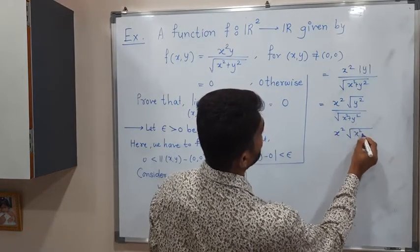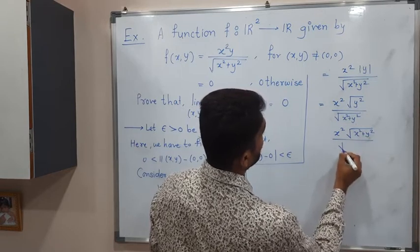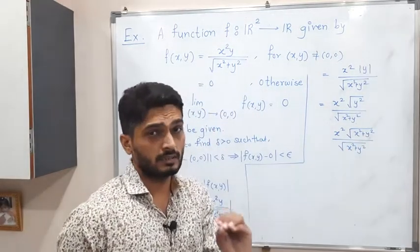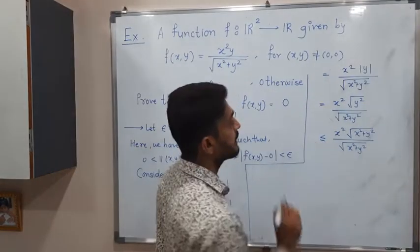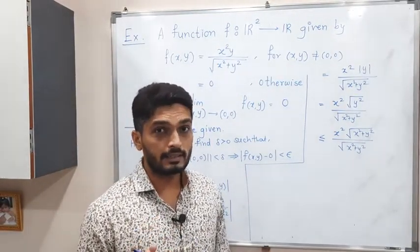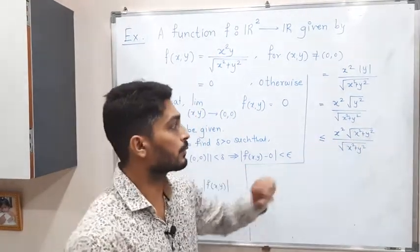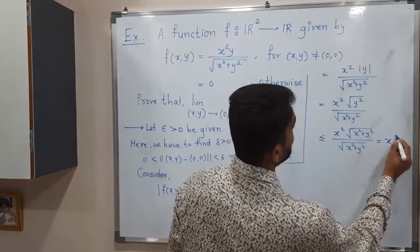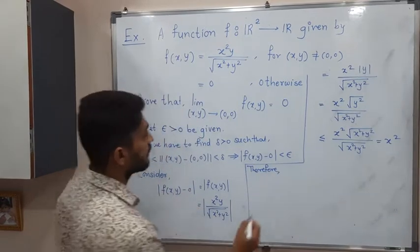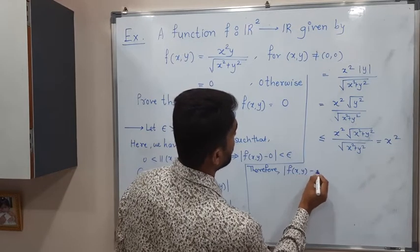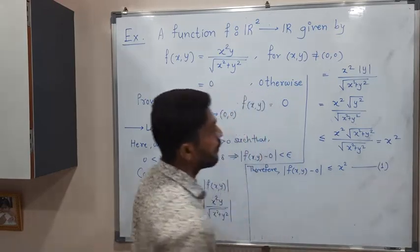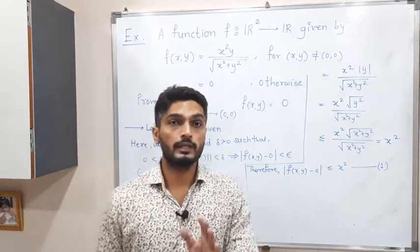Now I am going to add x² in the denominator — that is, replace y² with x² + y² in the denominator. Since we are adding something to the denominator we are actually potentially increasing the value, so we have a less-than-or-equal-to inequality. We can cancel x² with the square root, and finally we get: |f(x,y) - 0| ≤ x². I am calling this equation number one.